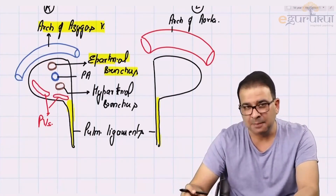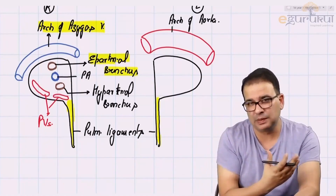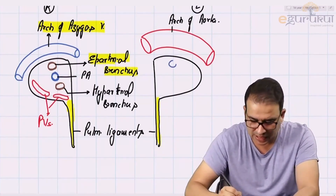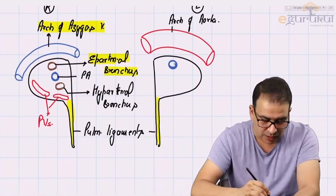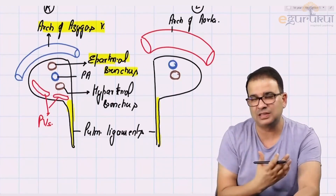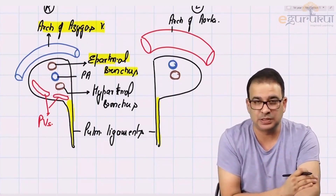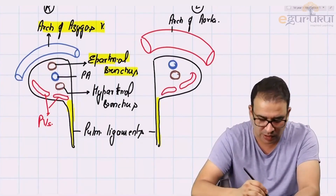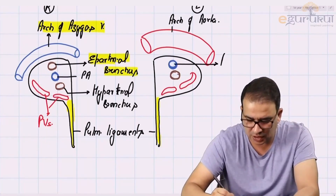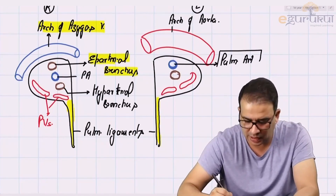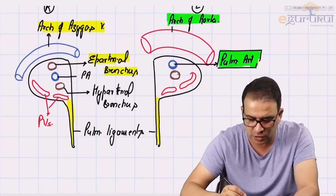It is a different story on the left side. On the left side, we have a long principal bronchus — the left principal bronchus goes directly inside, with no further division visible at the root. So the highest structure on the left side is the pulmonary artery. The pulmonary artery is the highest structure in the left root of lung, and it is in close relation to the arch of aorta.